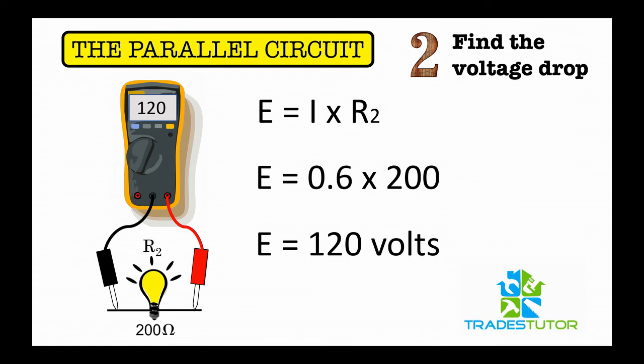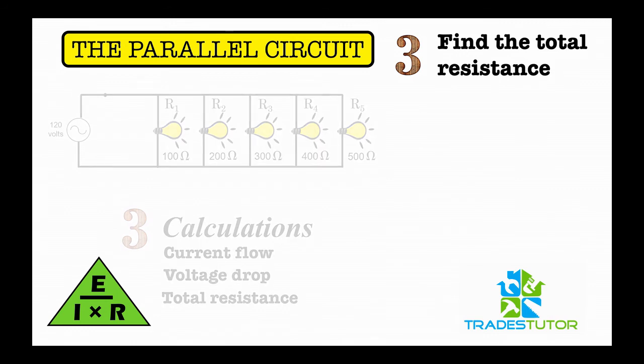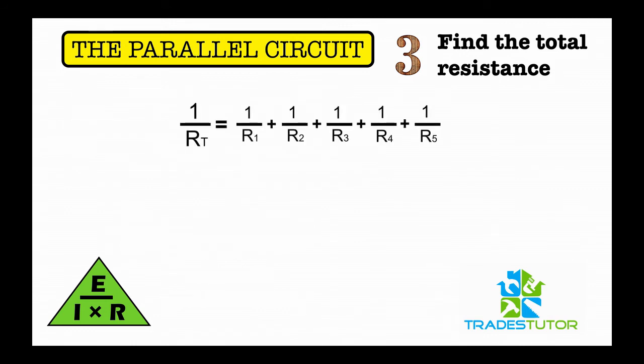All right, that was two of them. The third one: find the total resistance. Now this is a bit of a weird one. The formula for that is one over the total resistance is equal to one over R1 plus one over R2 plus one over R3 plus one over R4 plus one over R5.